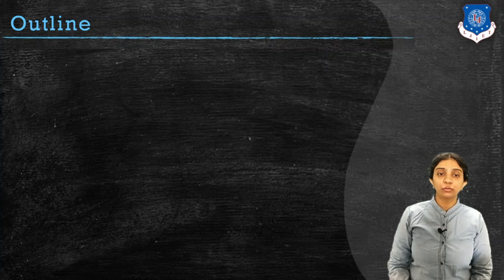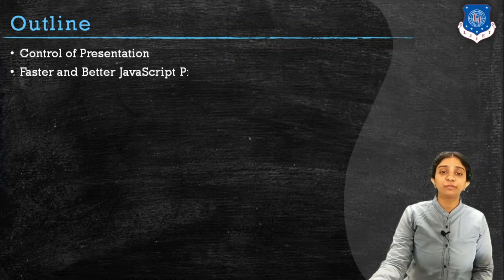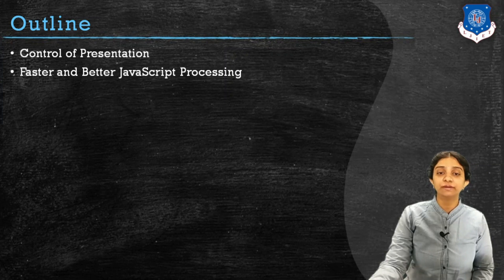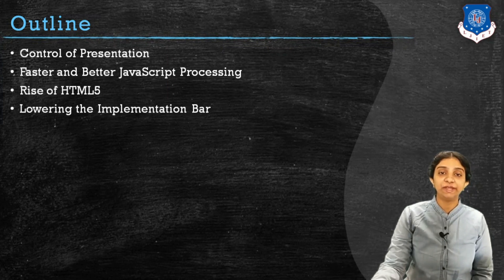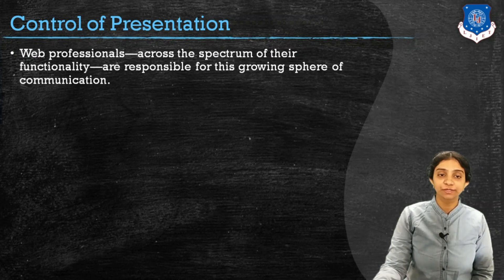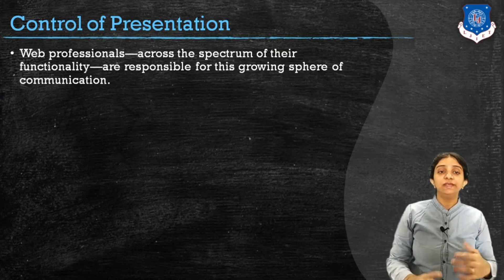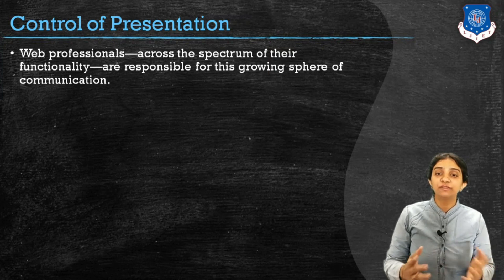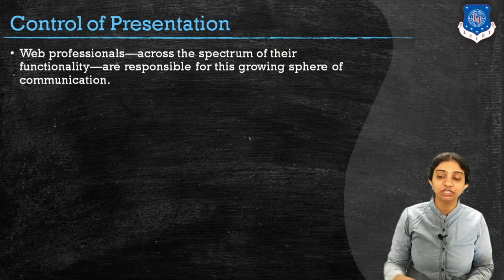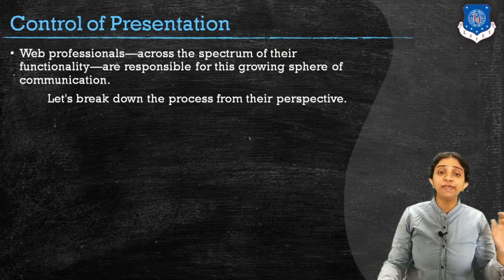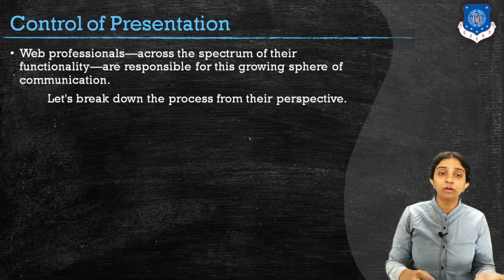In today's video we are going to learn key factors of data visualization. First we will see where is the control of presentation, then faster and better JavaScript processing, rise of HTML5 and browser support, and lowering the implementation bar. The control of presentation means whatever the data visualization we get at the end is controlled by web professionals, because they are responsible for growing the sphere of communication.